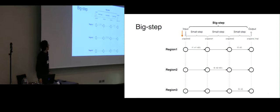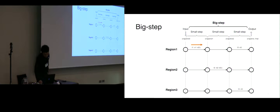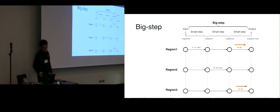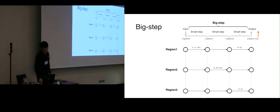The big step starts with accepting an environment input, and in the first small step the environment input triggers one transition in one of our concurrent regions. In the next small step it starts to trigger more transitions, and in the second one we are triggering more transitions in some other concurrent regions. Then we are done with the transitions and we deliver an output to the environment.